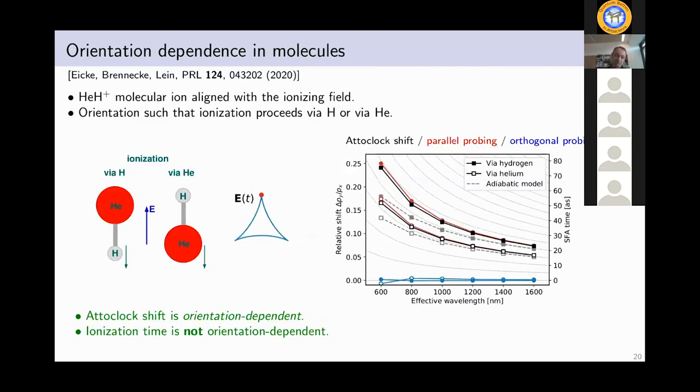Okay, now I will make this here very brief. We have applied this bicircular attoclock also to molecules and we found something interesting there. So we did it for a simple HeH+ molecule that is either aligned along the ionizing field or in the opposite direction, two different cases. And the interesting thing is that we do see an attoclock shift of course as with an atom. And this attoclock shift is orientation dependent. It depends on how we place the molecule. But the ionization time is not orientation dependent. No matter whether the molecule points up or down, ionization is always most strong at the time of the peak field strength.